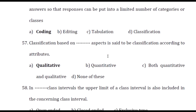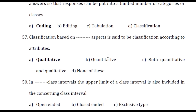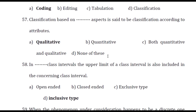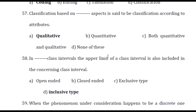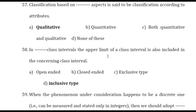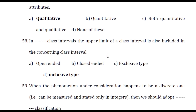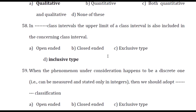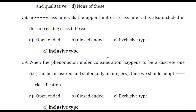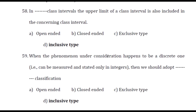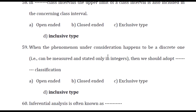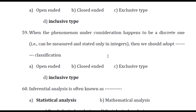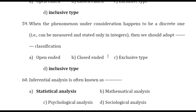Classification based on qualitative aspect is said to be classification according to attributes. In inclusive type class intervals, the upper limit of a class interval is also included in the concerning class interval. When the phenomenon under consideration is a discrete one — that is, can be measured and stated only in integers — we should adopt inclusive type classification. Inferential analysis is often known as statistical analysis.